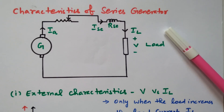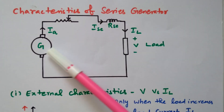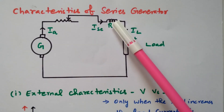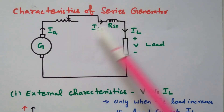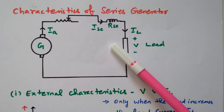Again there are three types available: shunt generator, series generator, and compound generator. How the armature and field are connected — accordingly it is classified.